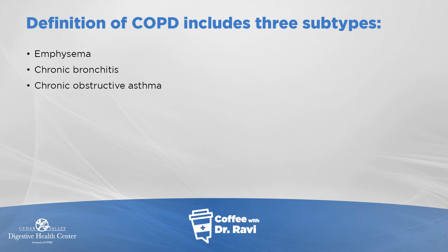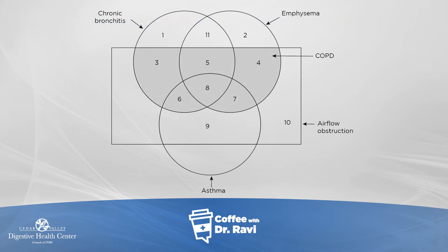When we talk about chronic COPD, there are three subtypes within it. One is emphysema, the second one is chronic bronchitis, and the third one is chronic obstructive asthma. We'll talk about these three subtypes briefly. This diagram gives us a sense of those three subtypes and shows that these subtypes can overlap.